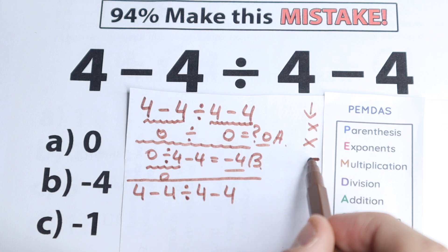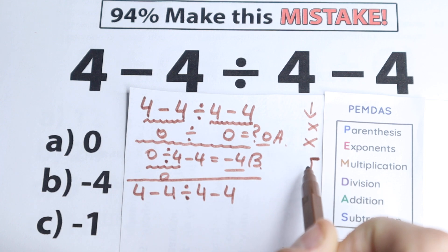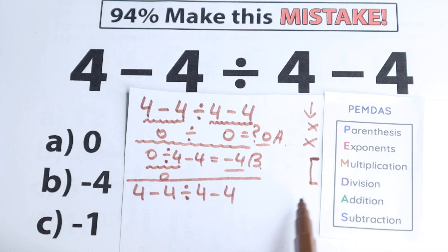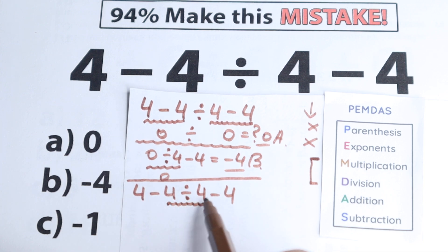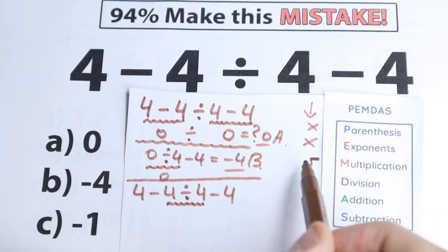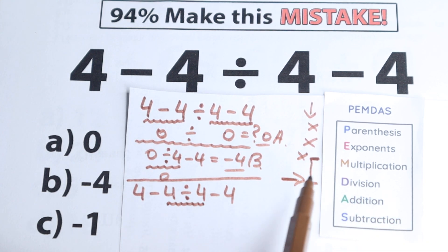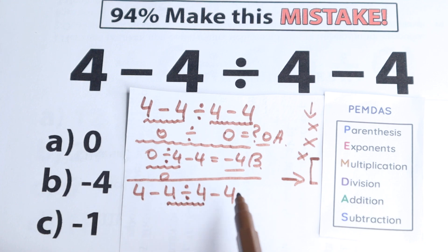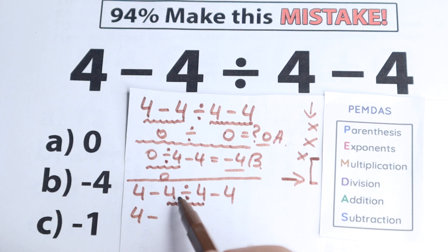The next step is the Multiplication and Division group. Many students make the mistake of treating these separately, but according to PEMDAS, multiplication and division form one common group. We scan and find a division sign. There is no multiplication, just division. So our first operation is to divide 4 by 4, giving us 1. Now we have 4 minus 1 minus 4.